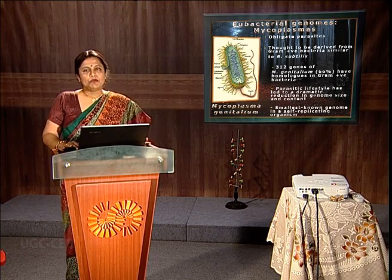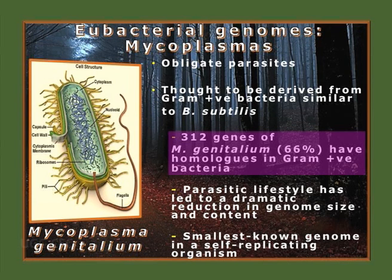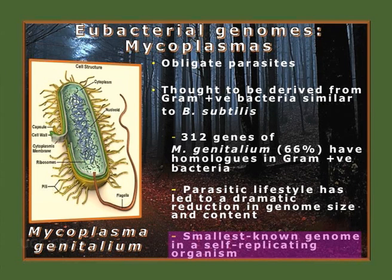Next is mycoplasma, an obligate parasite. It has been derived from gram-positive bacteria and has 312 genes homologous to gram-positive bacteria. Its parasitic life cycle has led to a dramatic reduction in genome size. Mycoplasma is considered the smallest self-replicating genome and was the first organism wherein people thought of making some artificial forms of life.